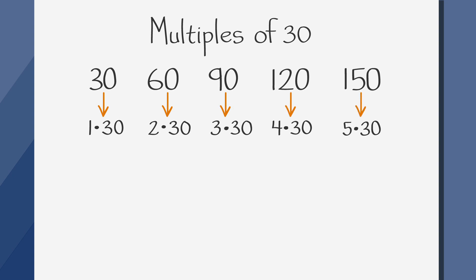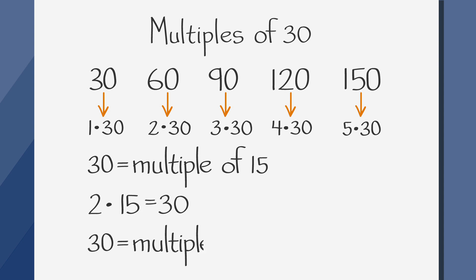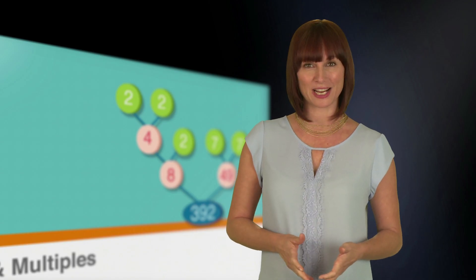In this case, 30 is a factor of each of these multiples. For another example, 30 is a multiple of 15, since 2 times 15 is 30. This means that 30 is also a multiple of 2. Now that we know that factors and multiples are cousins, let's take a look at a problem together.